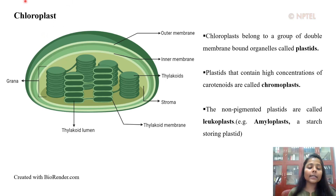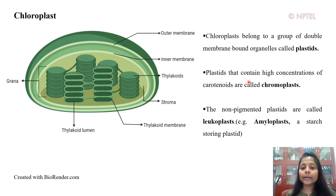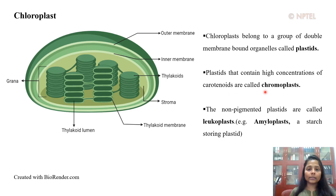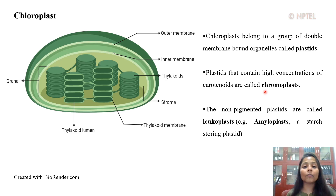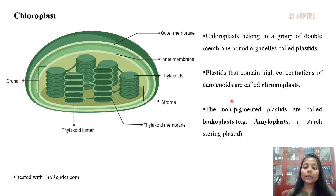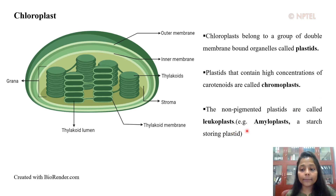The chloroplast derives its name from its characteristic pigment chlorophyll. Plastids also contain a high concentration of carotenoids; these are called chromoplasts and they are often responsible for the characteristic orange and yellow colors of different fruits. The non-pigmented plastids are called leukoplasts — for example, amyloplasts, which are starch-storing plastids.